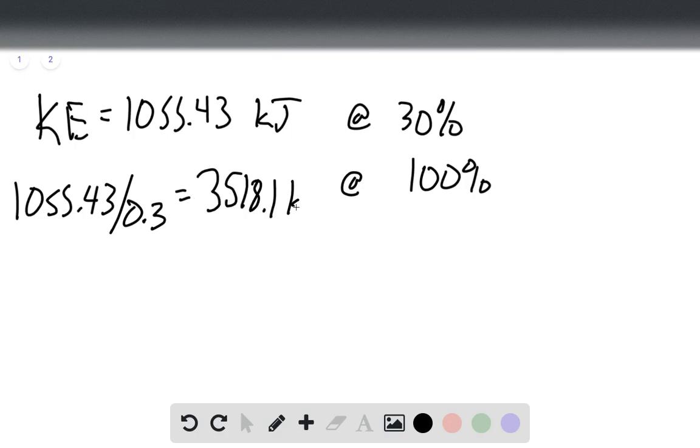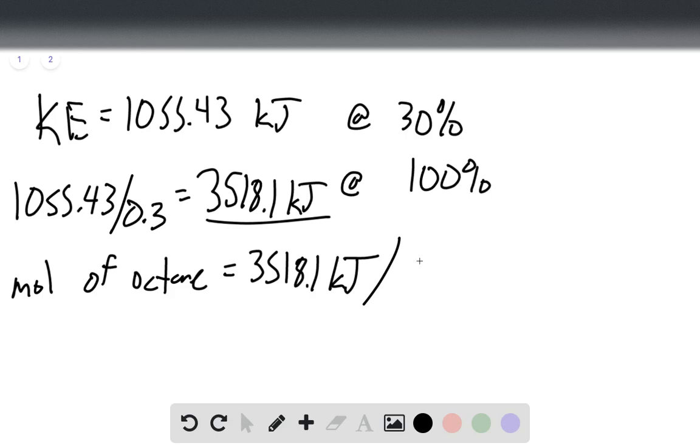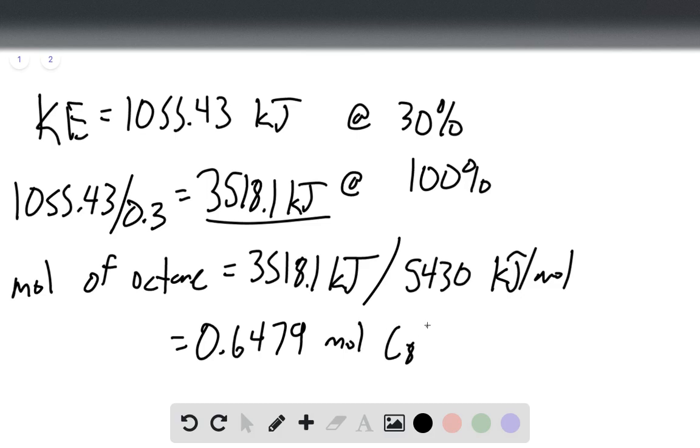And so now that we have that we can determine the moles of octane by taking our number and dividing it by the heat of combustion of octane, which is 5,430 kilojoules per mole, and that gives us 0.6479 moles of octane, C8H18.